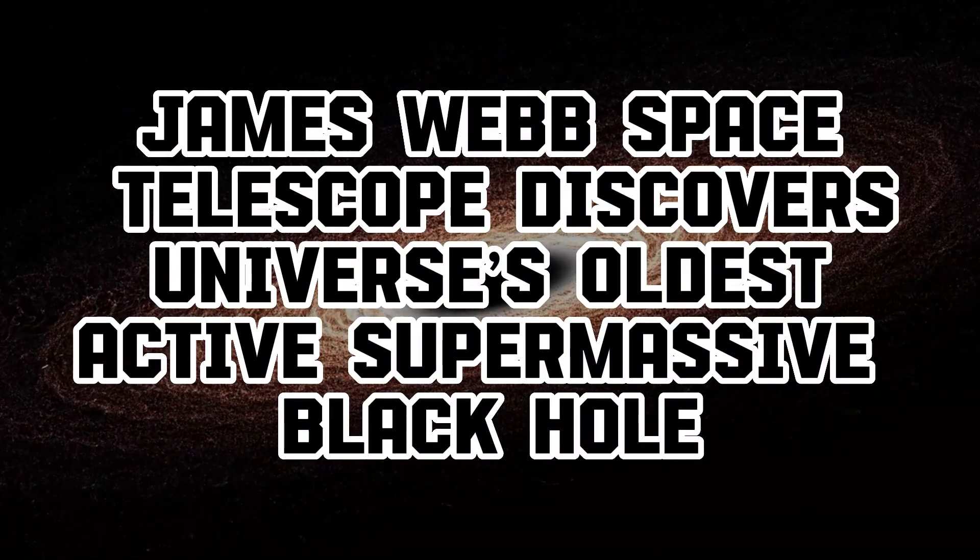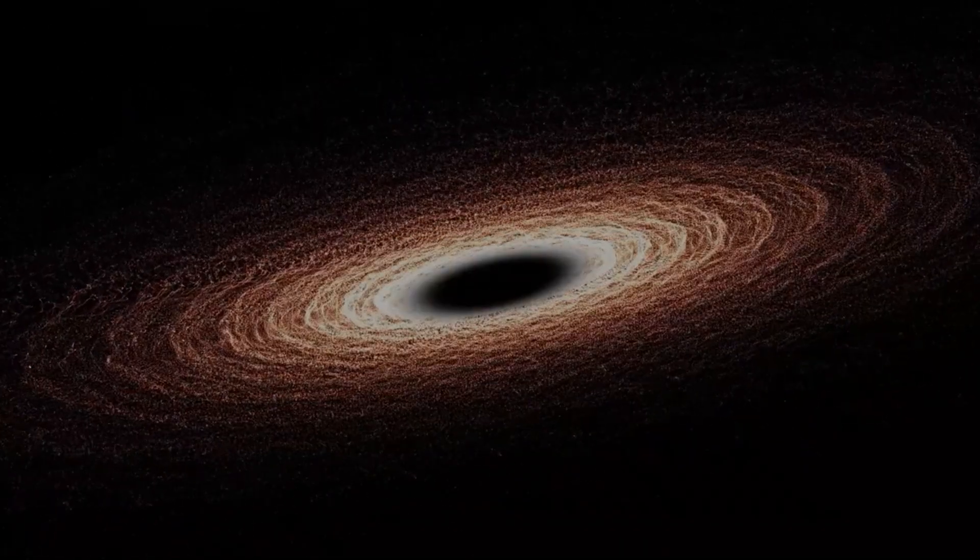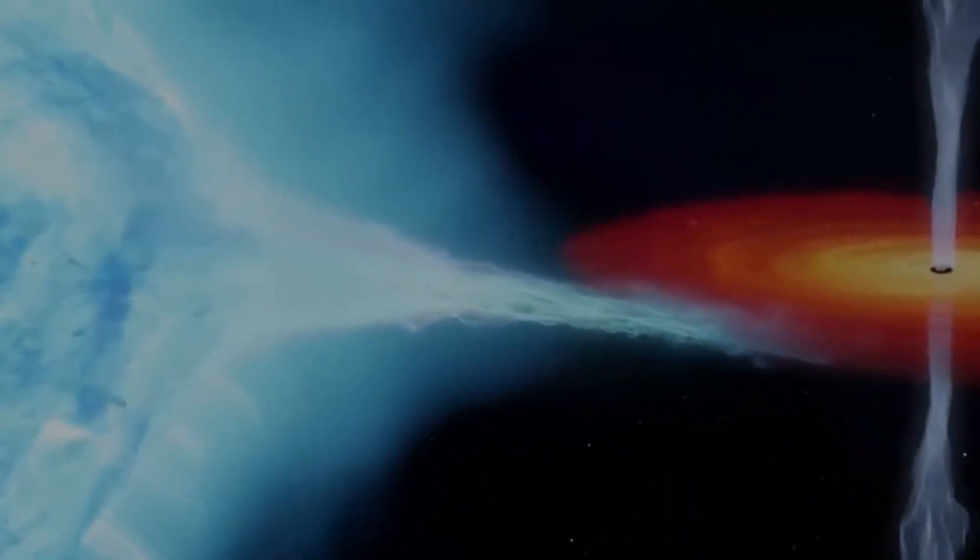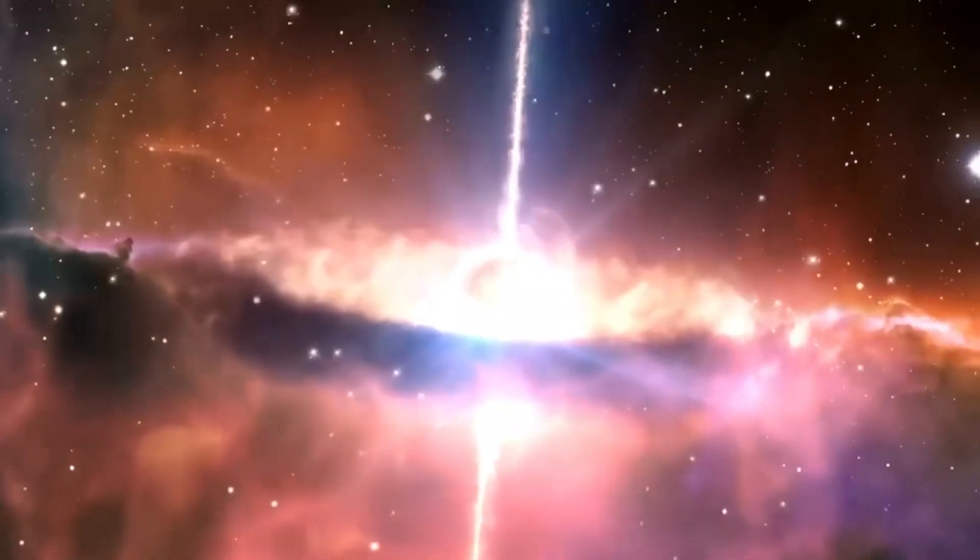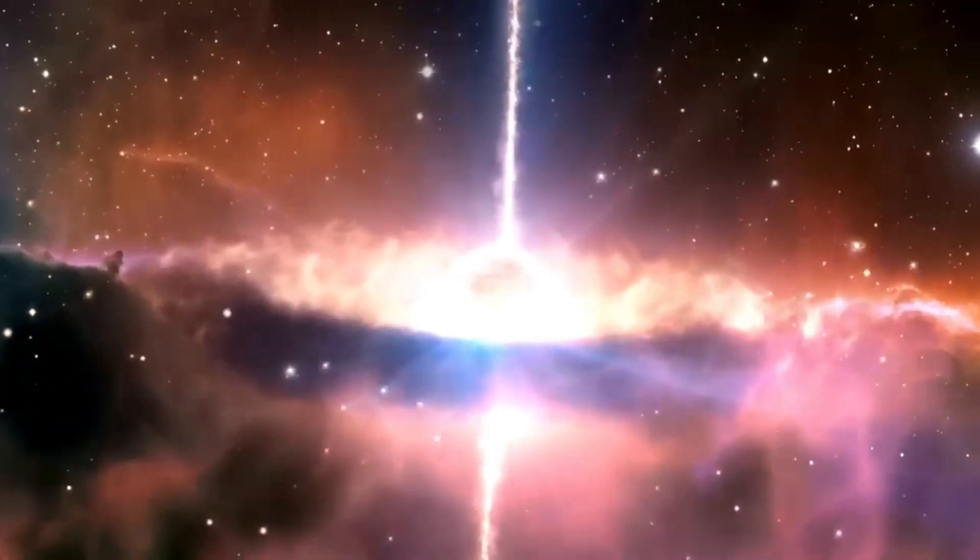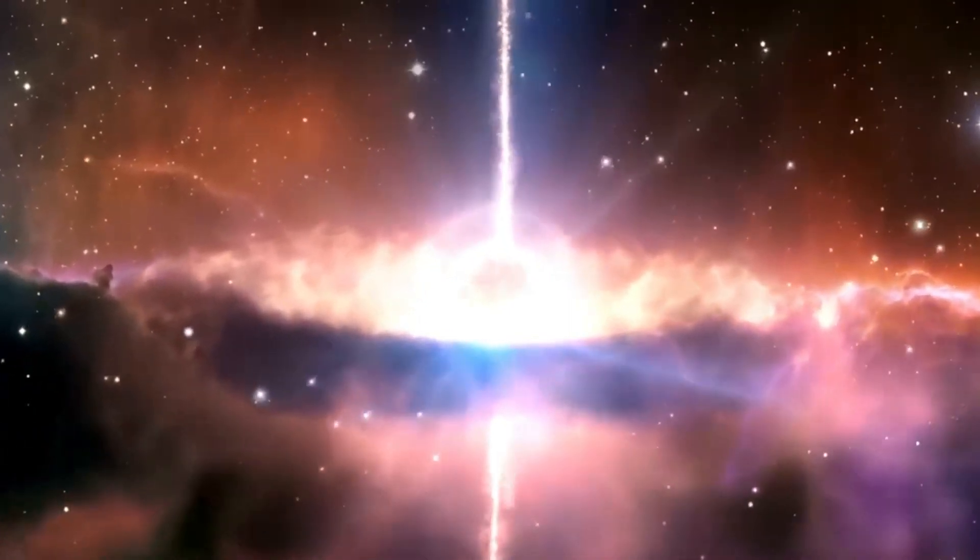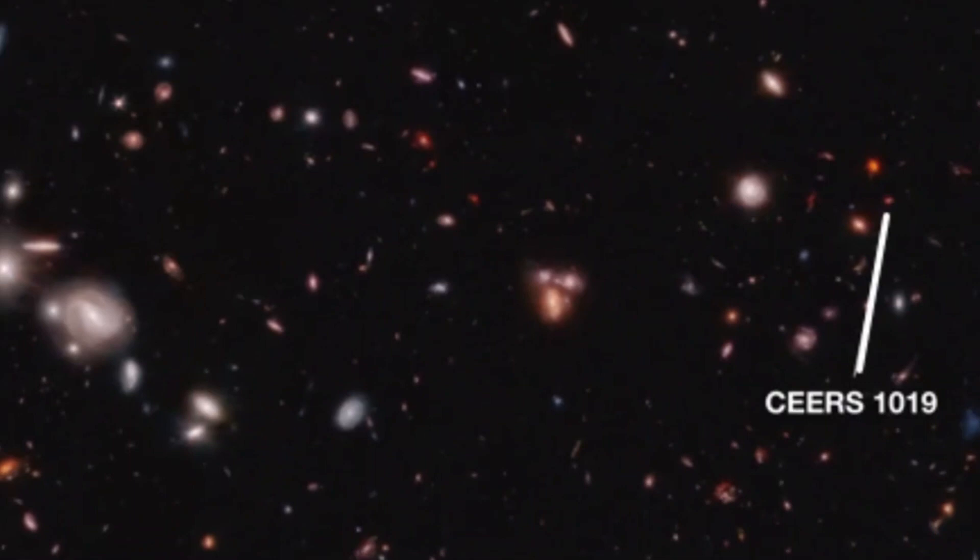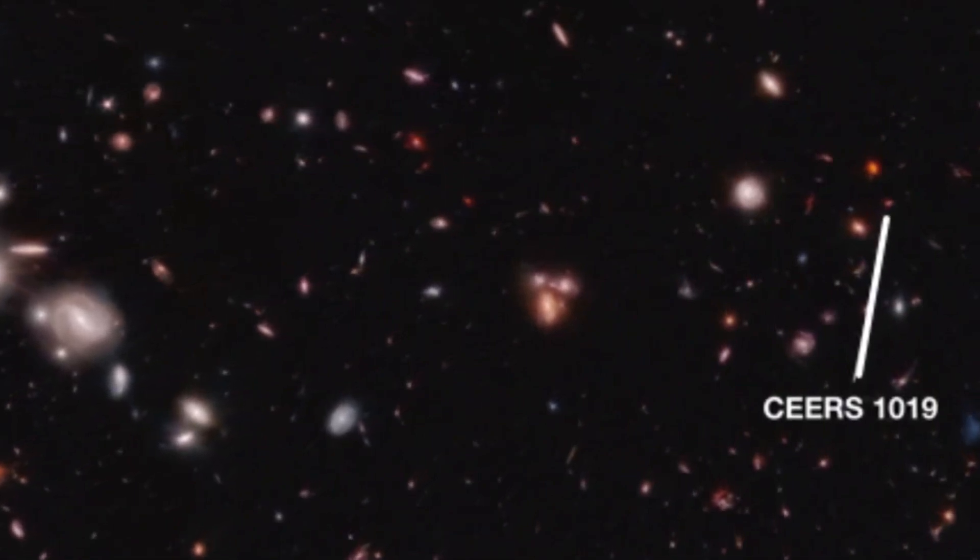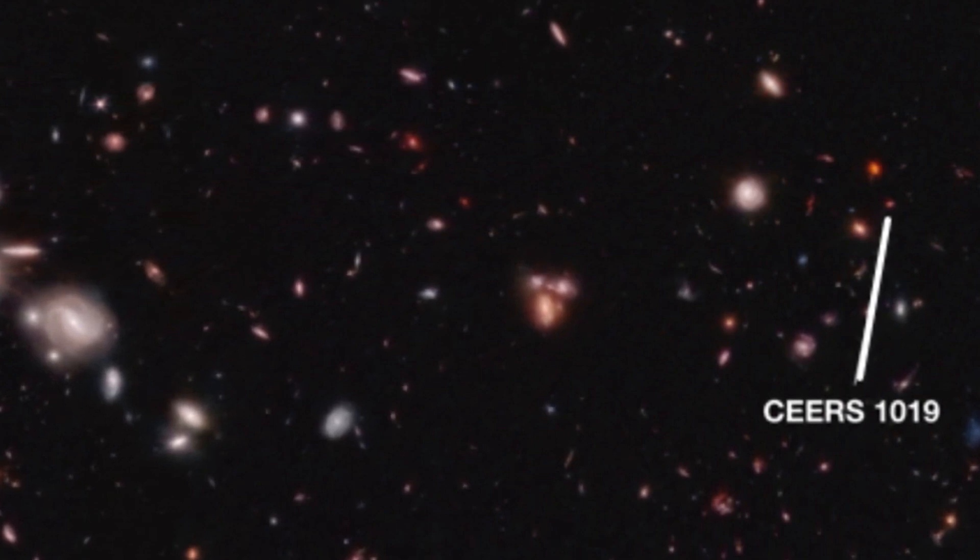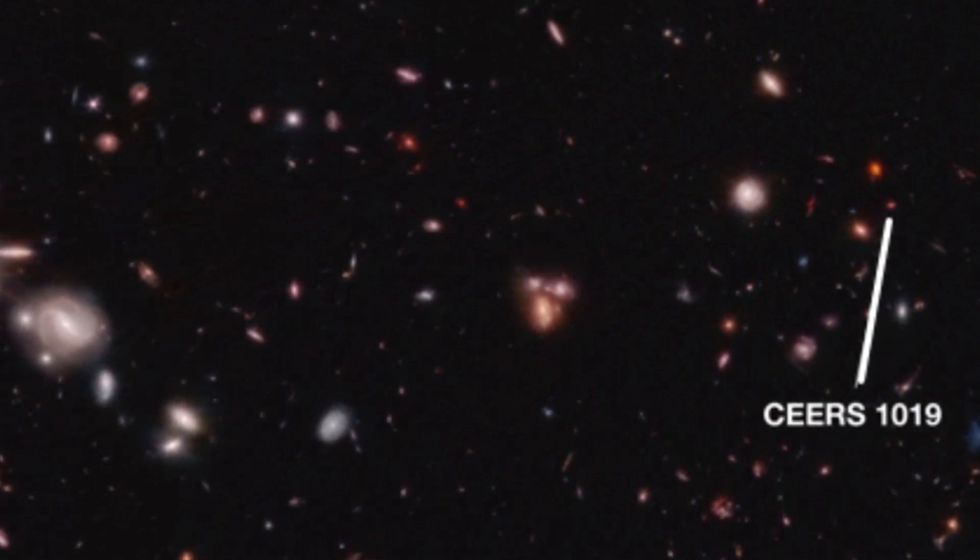In the misty dawn of the cosmos, a remarkable entity has emerged that has left researchers in awe. Observations from the James Webb Space Telescope have unveiled an active supermassive black hole, a staggering 10 million times the mass of our Sun. This ancient cosmic behemoth was born when the universe was a mere 570 million years old.